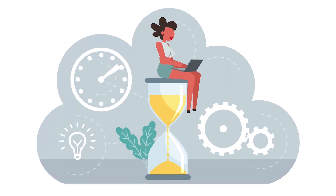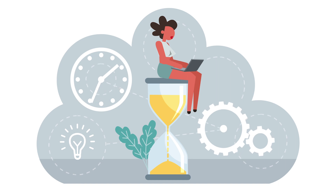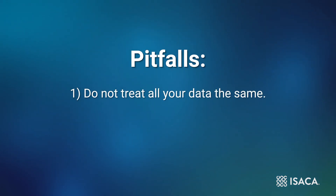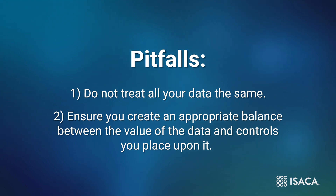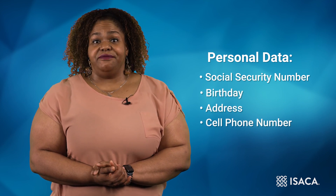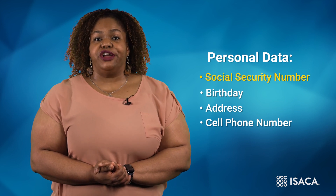Why the focus on critical data activities? Because all businesses have a finite amount of time and resources. A few pitfalls to watch out for when leveraging these best practices in your organization: one, do not treat all your data the same; two, ensure you create an appropriate balance between the value of the data and the controls you place upon it. For example, data personal to you includes your social security number, birthday, address, and cell phone number. Some of this information, like your social security number, is critical and requires strict controls, whereas you may typically share your address and phone number with all your family and friends. Similar to how we value and interpret our personal data, organizations must also evaluate the level of control and criticality of their data.